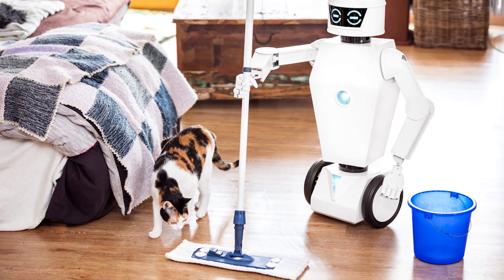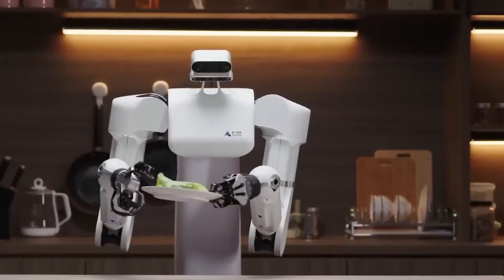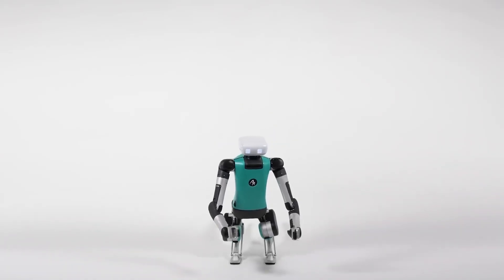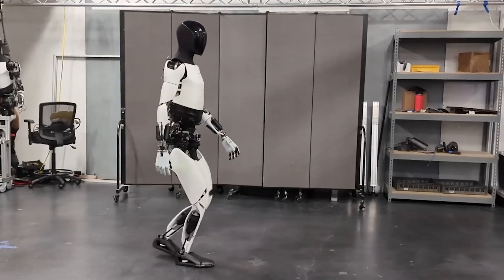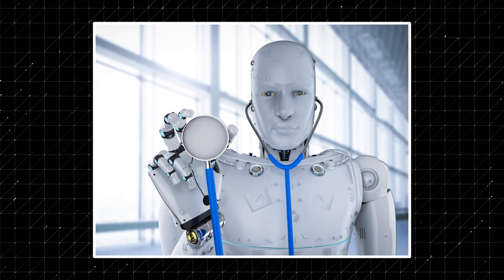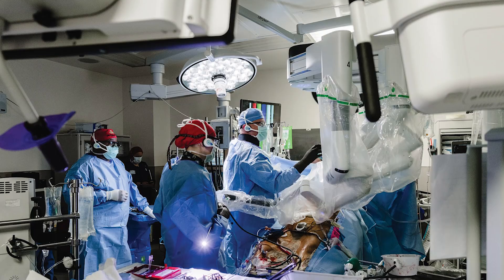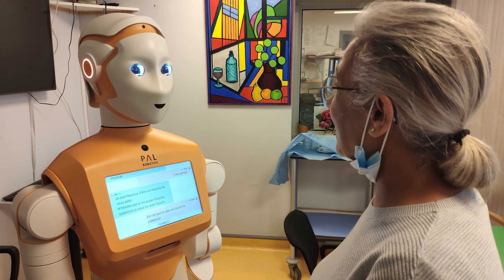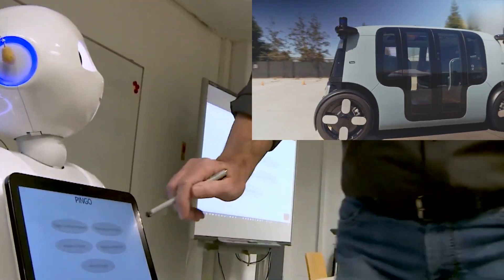And it doesn't stop there. In households, AGI Humanoid Robots will be the ultimate helpers, tackling chores, maintenance, and even providing emotional support that exceeds what typical robots can offer. They'll extend their reach into healthcare, acting as superintendents to doctors and nurses, performing surgeries with unparalleled precision, and monitoring patients' vital signs.